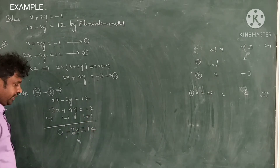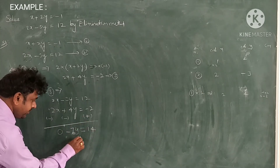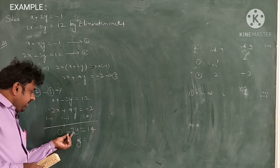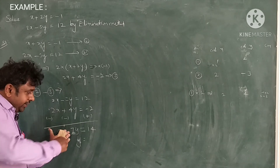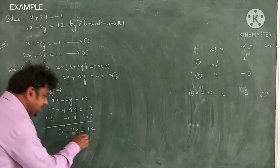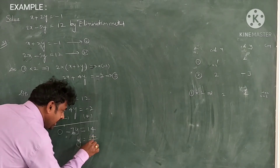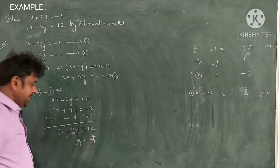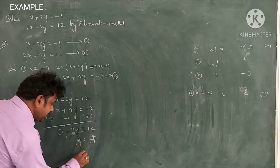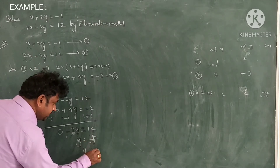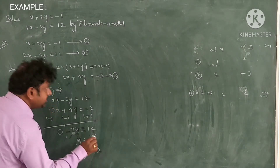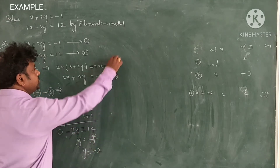This gives minus 7y equals 14. Transposing minus 7 to the RHS: y equals 14 divided by minus 7. That is minus 2. So y is equal to minus 2.